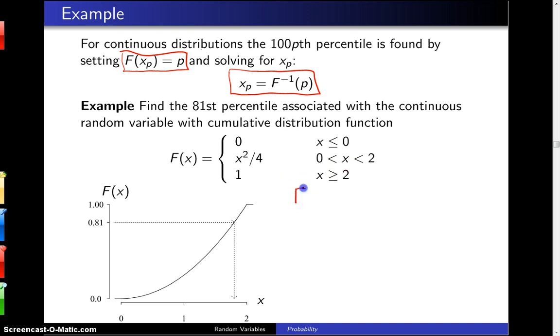In this case, the equation to solve to find the 81st percentile is F of x sub 0.81 equals 0.81, because what we want is the 81st percentile, which is x sub 0.81.